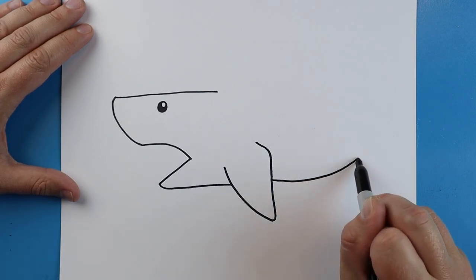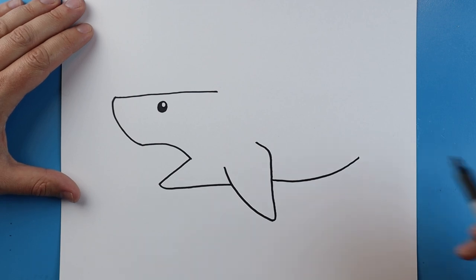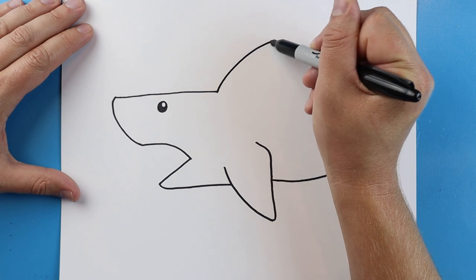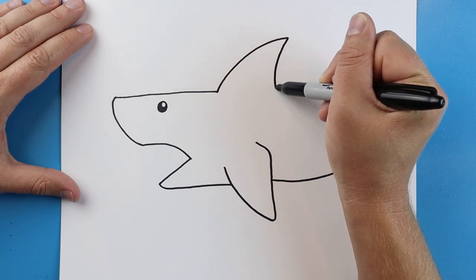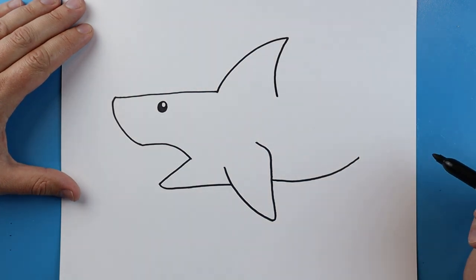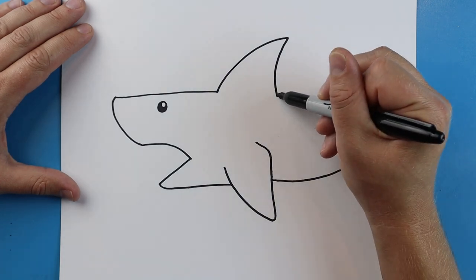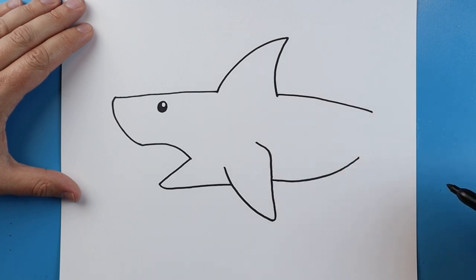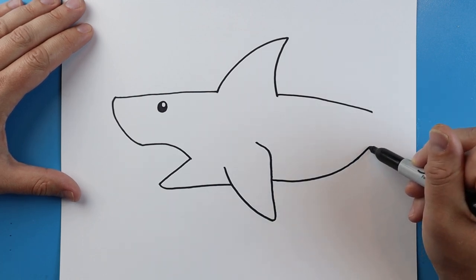I'm going to draw a long curve line that comes up here. And then right here we're going to make a big fin that's going to come up and down. Then I'm going to draw a line that comes out to here and you can see it kind of comes down. And we're going to bring this line up.